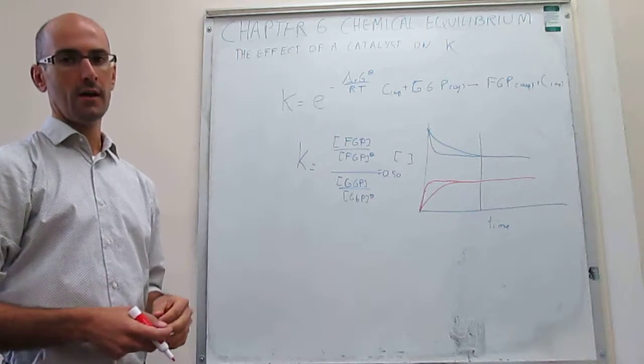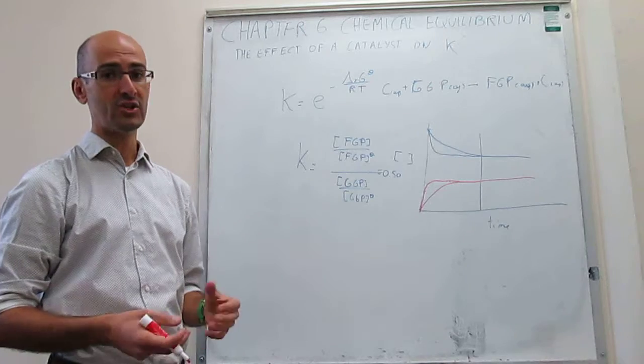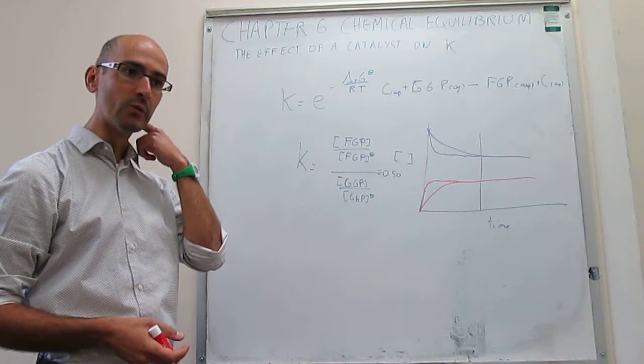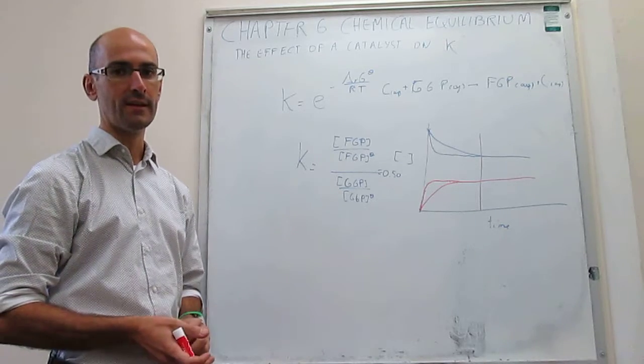So to summarize this video, a catalyst does not change the value of the equilibrium constant. It only makes the equilibrium be reached faster than if you don't have a catalyst.